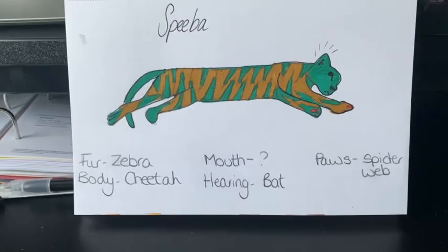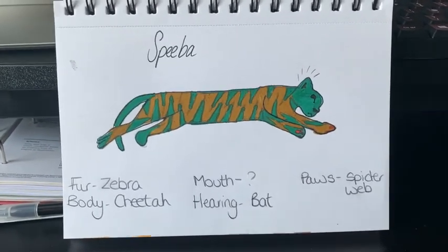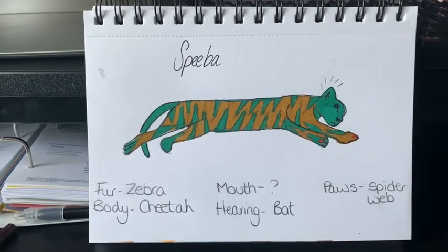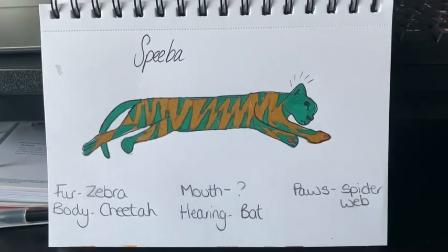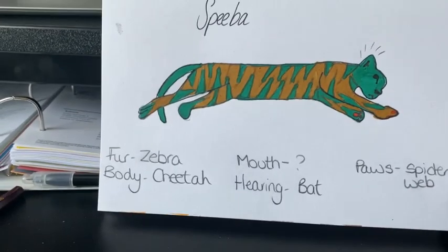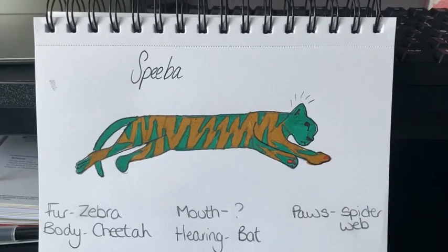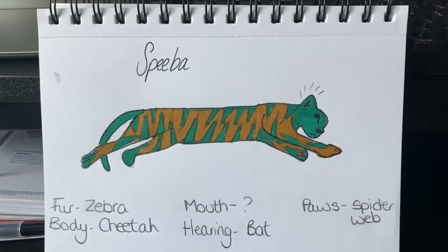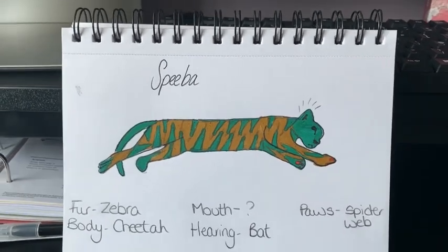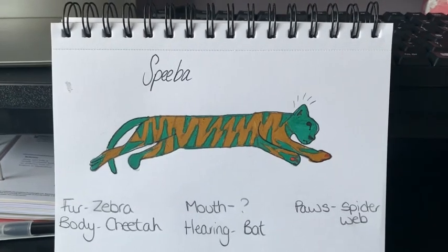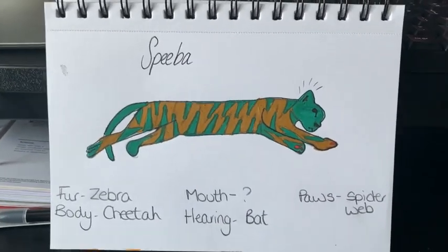For the paws I've taken inspiration from a spiderweb. Spiders produce silk which creates the web, and when something touches the silk it gets stuck and finds it hard to come away. I thought it would be great if my animal could produce spider silk on its paws so that when it grabs onto prey, they stick and it's harder for them to get off.